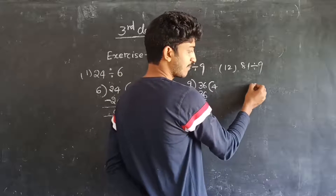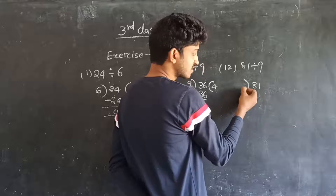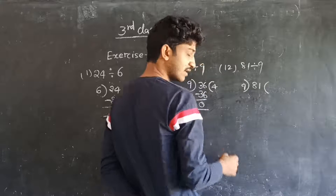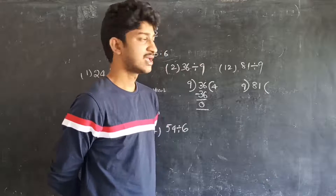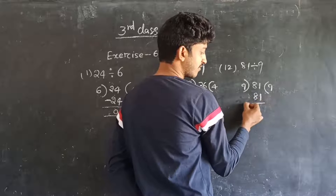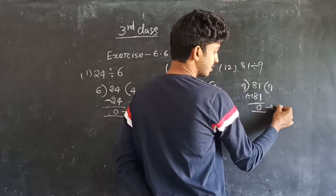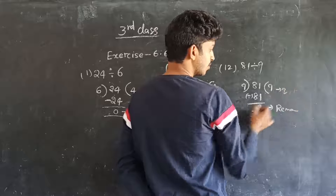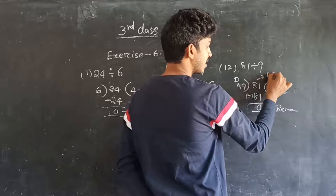Next problem: 81 divided by 9. Take 81 at the center and write the divisor on the left side. In the 9 times table, 81 comes 9 times — 9 into 9 is equal to 81. So 81 minus 81 is equal to 0. The remainder is also 0 and the quotient is 9. The divisor is also 9 and the dividend is 81.